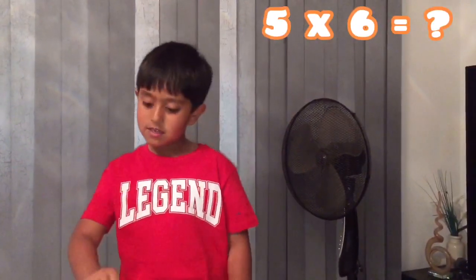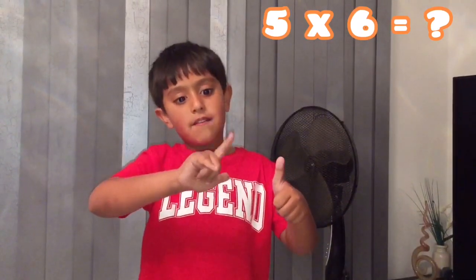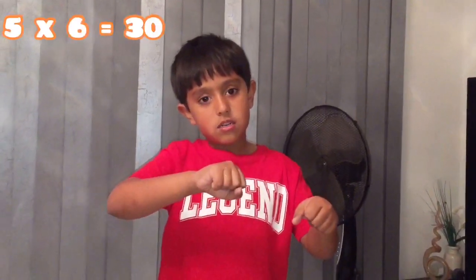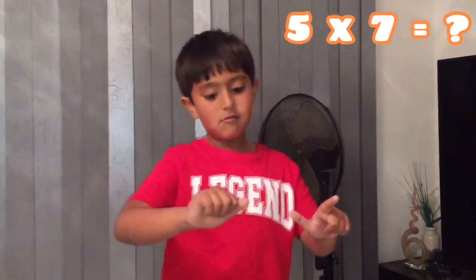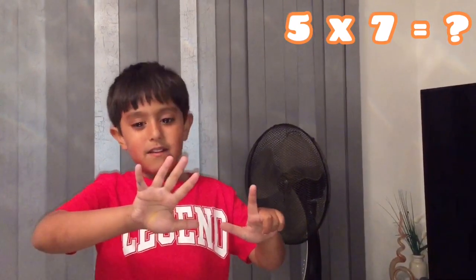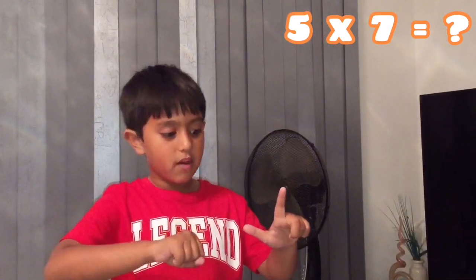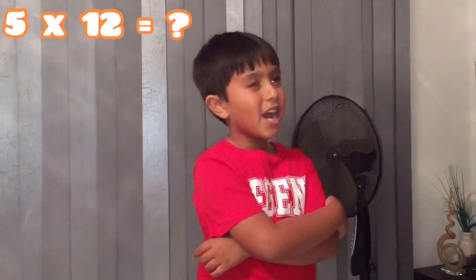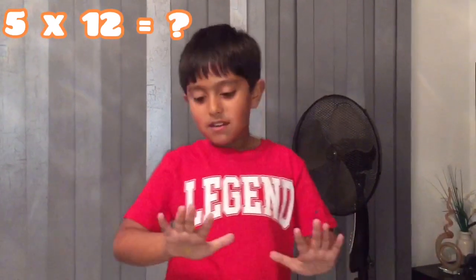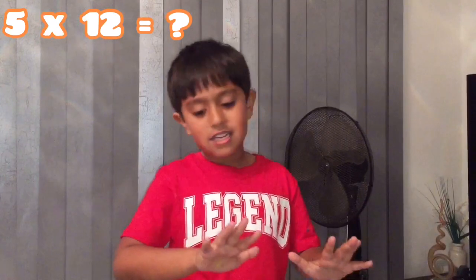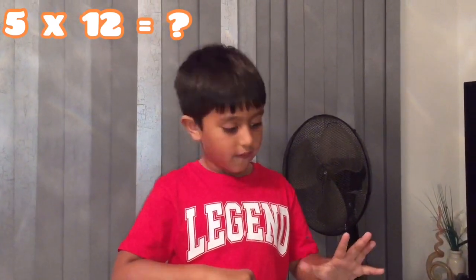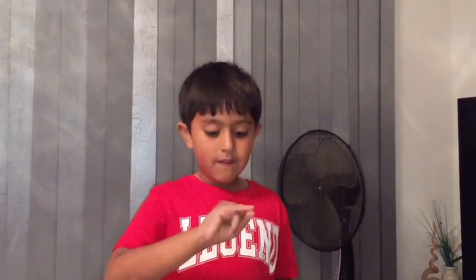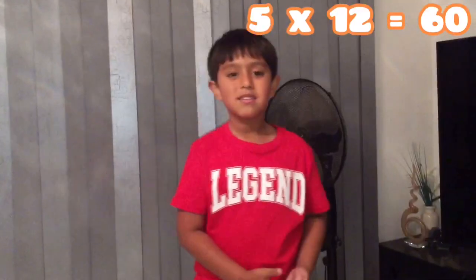5 times 6: counting up... 30. Ok, 5 times 7? 5, 10, 15, 20, 25, 30, 35. Well done. Ok, 5 times 12? 5 times 12 — counting: 5, 10, 15, 20, 25, 30, 35, 40, 45, 50, 55, 60.